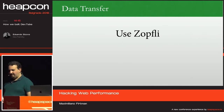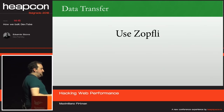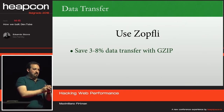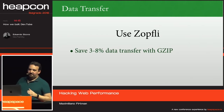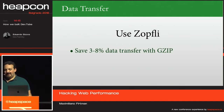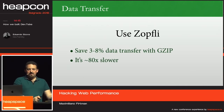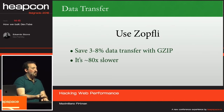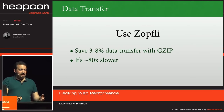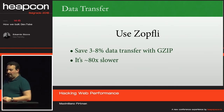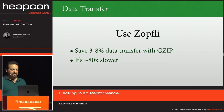Zopfli. This is a new algorithm for GZIP that compresses more — it can save up to 8% of data transfer. The same HTML will occupy fewer bytes over the wire. The problem is it's 80 times slower in CPU for compressing, not decompressing. But because it's GZIP-based, it works with IE6 and every browser. You can start applying this on your server and save data transfer so your website appears faster on users' devices.